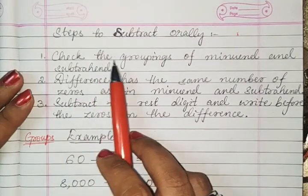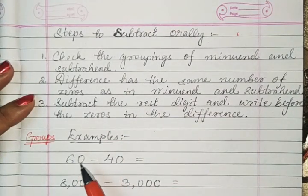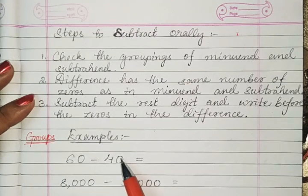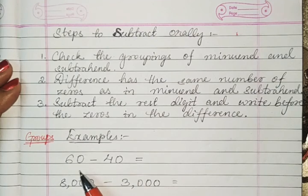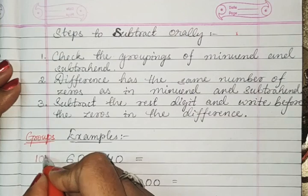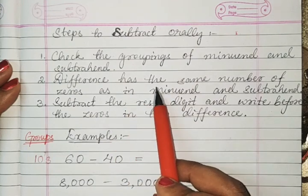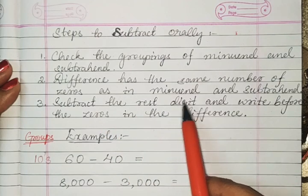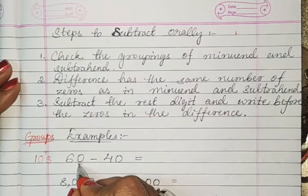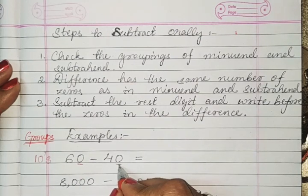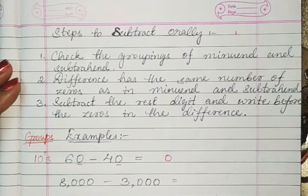The first step is: check the groupings of the minuend and subtrahend. For example, 60 minus 40 — you have to check which group it is in. There is one zero, so it is in the tens group. The second point: the difference has the same number of zeros as in the minuend and subtrahend. Here, the minuend has one zero and the subtrahend also has one zero, so the difference will also have one zero.